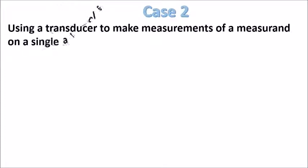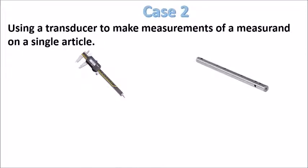For case number two, using a transducer to make measurements of a measurand on a single article, for example, using a Vernier caliper to measure a single shaft diameter.